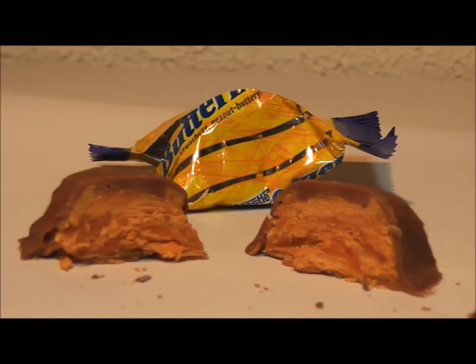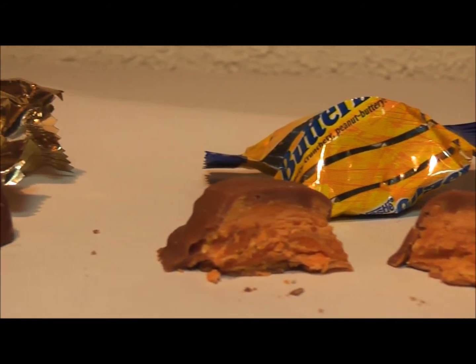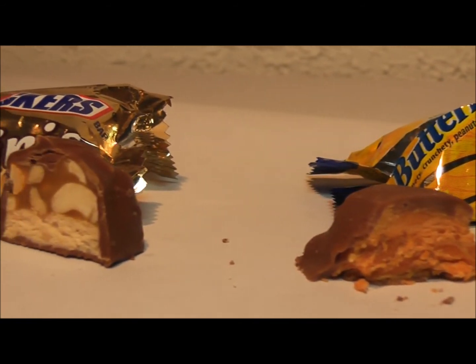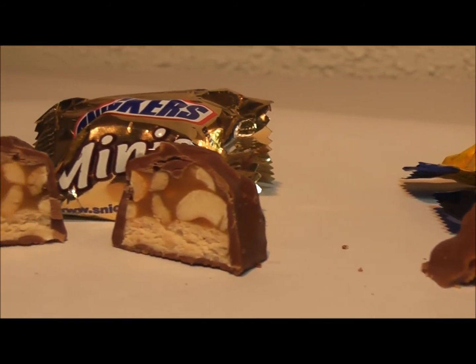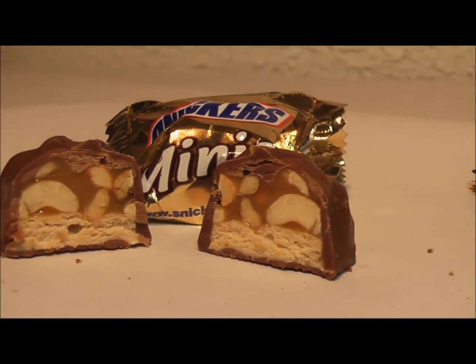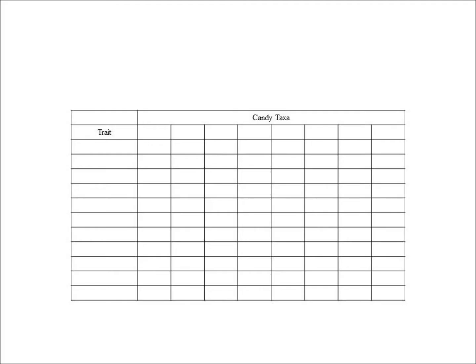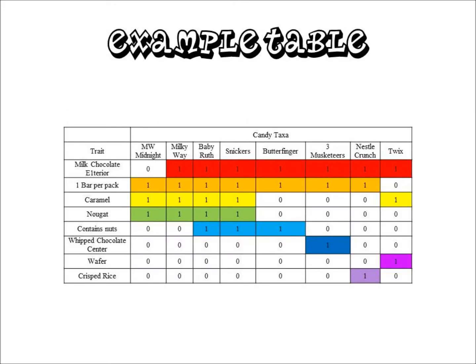After identifying traits of the candy, the students can now fill in the table given to them as part of this lesson. The students may also find a Venn diagram useful for organizing their information. Here's an example table that has already been filled out.